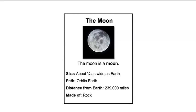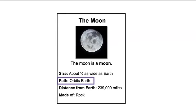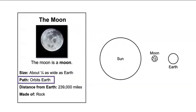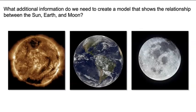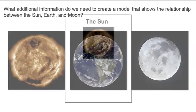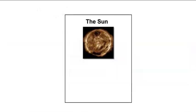I noticed we read that the moon orbits Earth. Do you think the moon passes between the sun and Earth? Maybe. Let's create a model to help us answer this question. What additional information do we need to create a model that shows the relationship between the sun, Earth, and the moon? Well, we need to know how big each object is, and we need to know if the objects are close to each other or far away from each other. Let's read more about the sun and Earth to see if we can answer some of our questions.